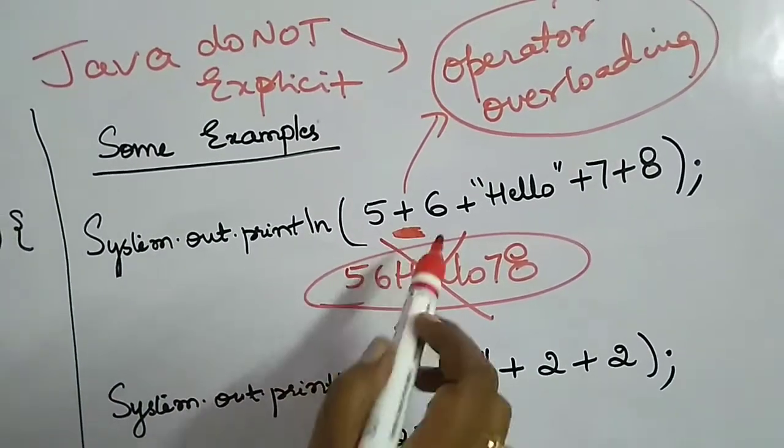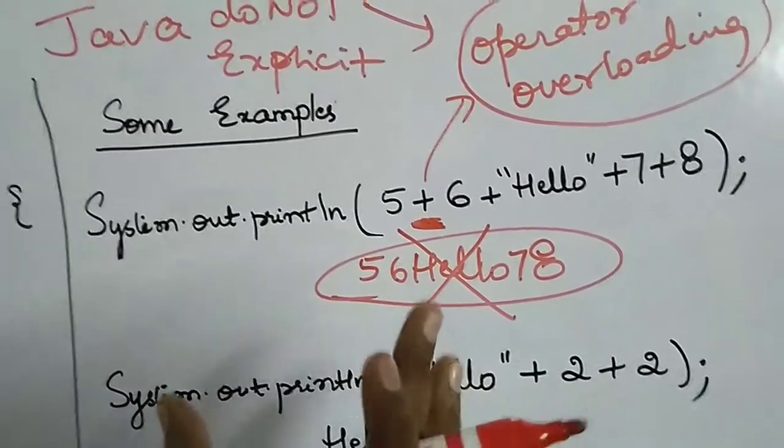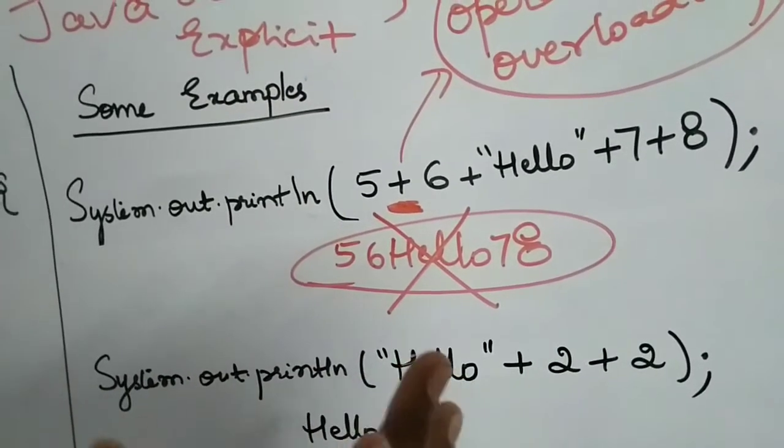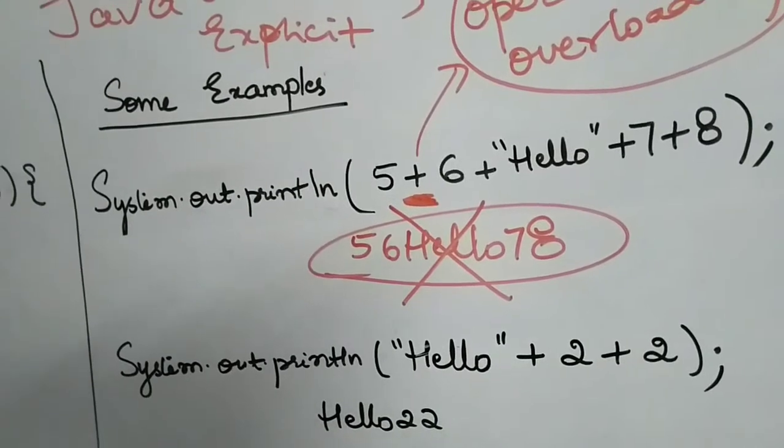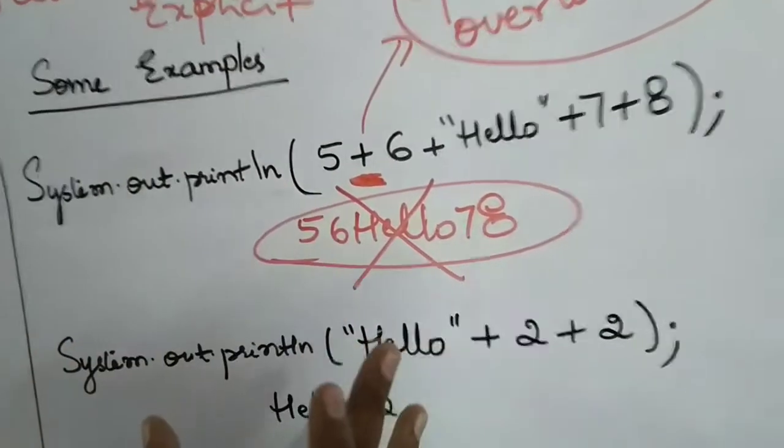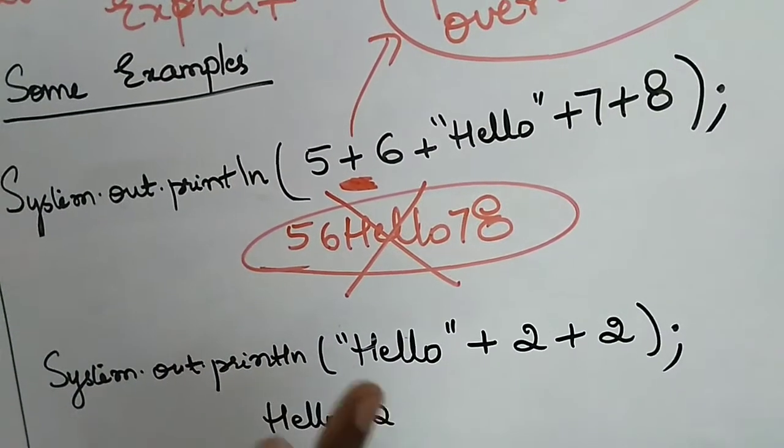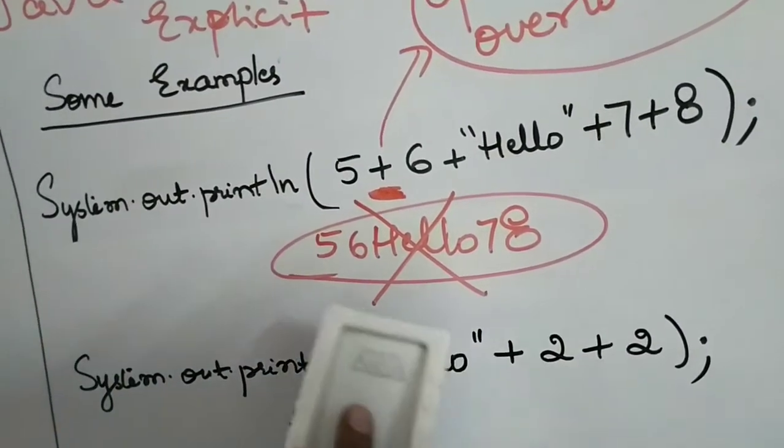When plus is put between two operands of integer type, it acts like a numerical operator. When put between two strings, it acts like a concatenation operator.